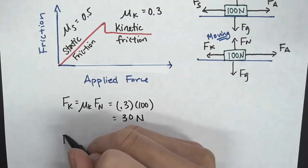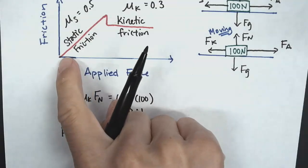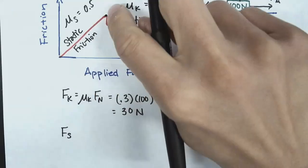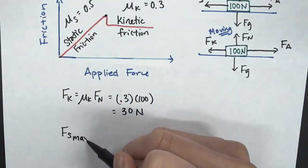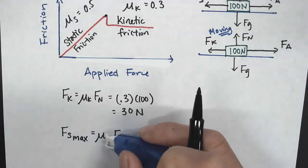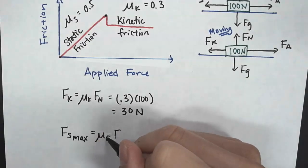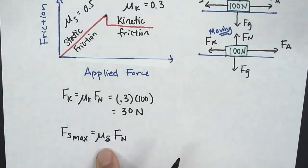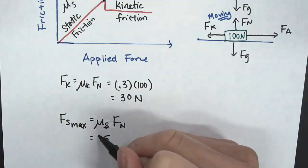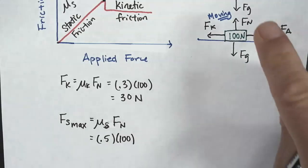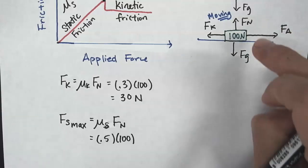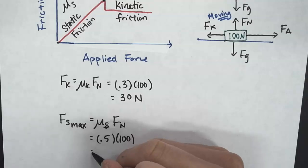Now let's look at static friction — the equation is a little different. Notice that static friction changes depending on the applied force, but there is a maximum. What we calculate is that maximum: F_S max equals μ_S times F_N. So substituting, that's 0.5 times F_N. The weight of the object is 100 newtons — be careful, the normal force is not always equal to the weight; on an incline it equals a component of the weight. In this case they are equal, so we get 50 newtons.